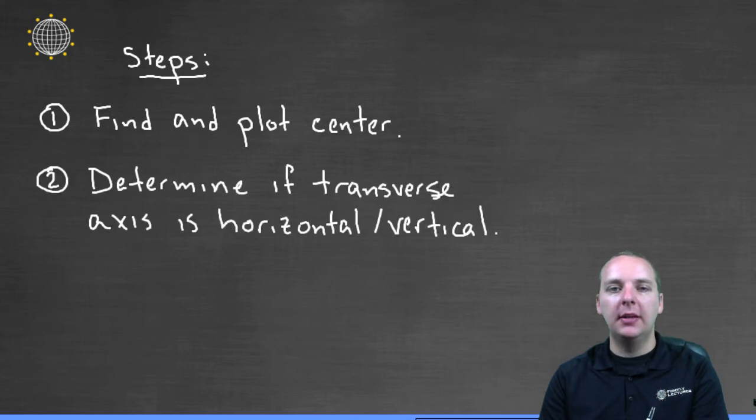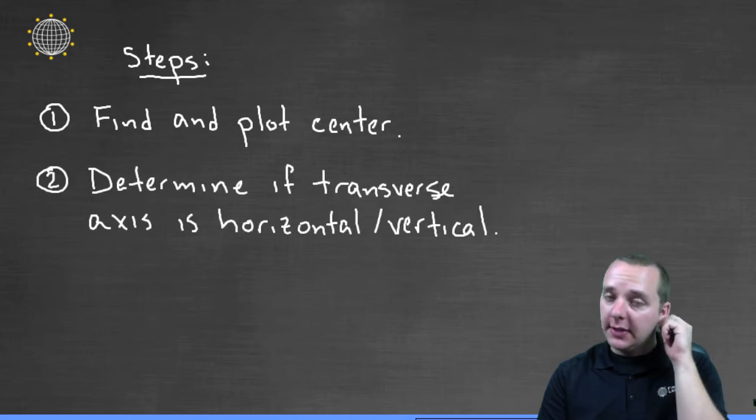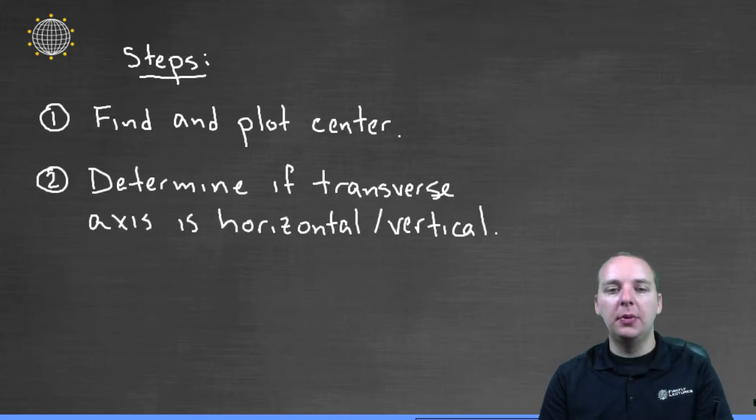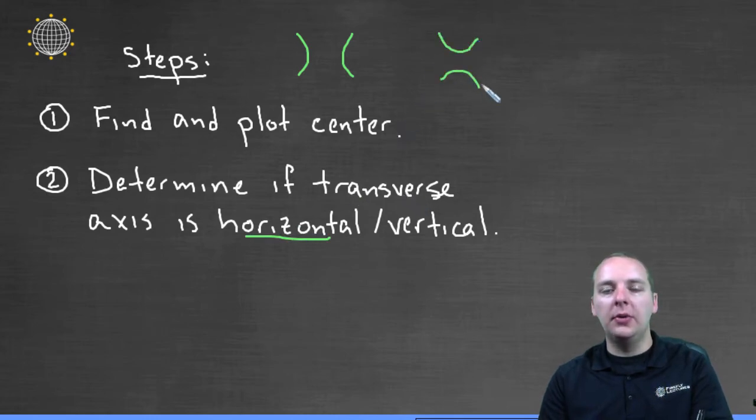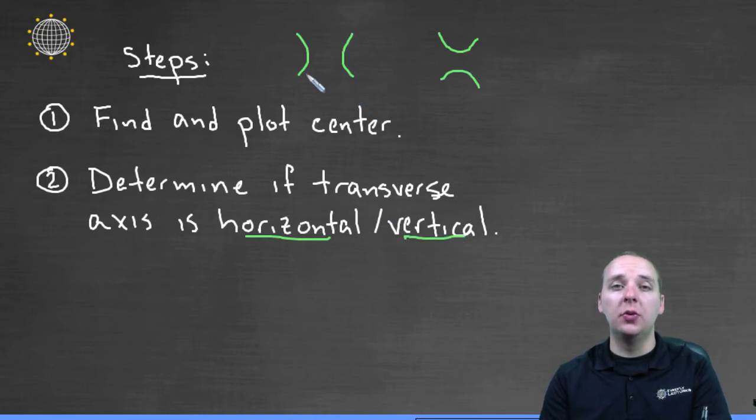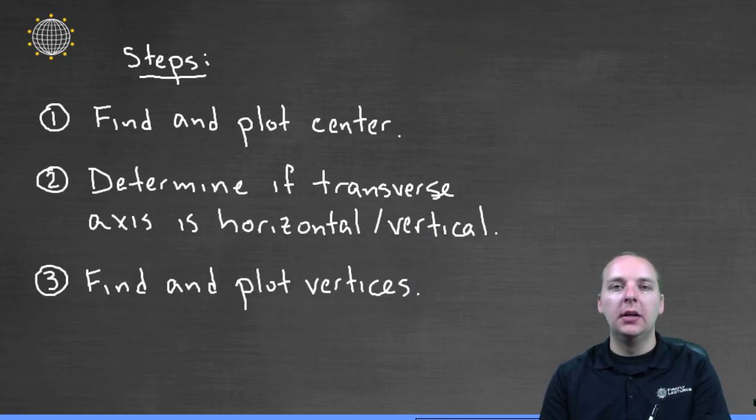Once the center is plotted, the next thing you're going to do is basically figure out if this hyperbola opens left and right. In other words it has a horizontal transverse axis, or does it open up and down and have a vertical transverse axis. You have to make a decision on which graph it is. Third thing you do is once you know where your transverse axis is, you can find and plot the vertices.